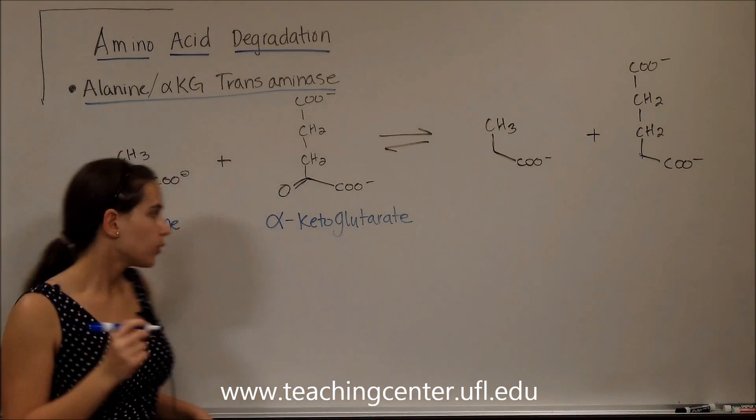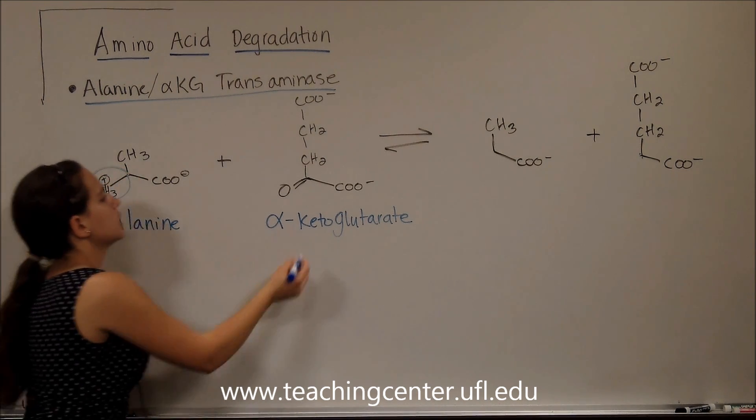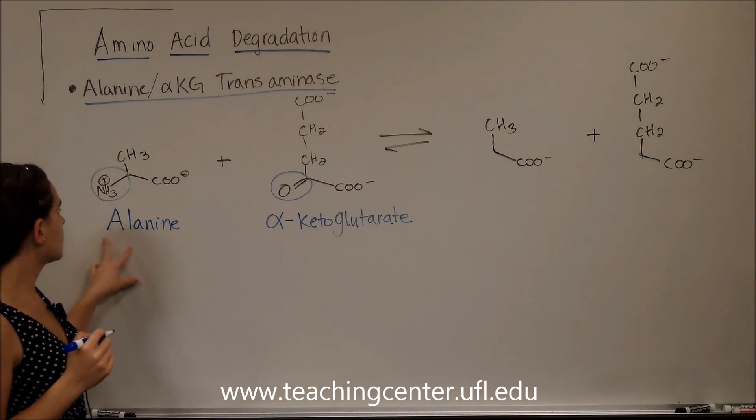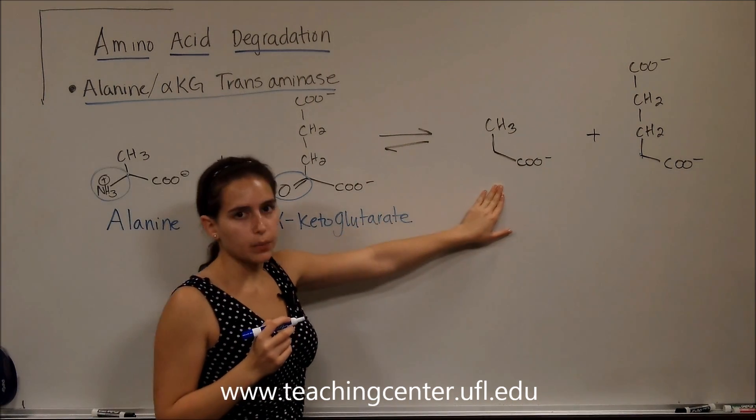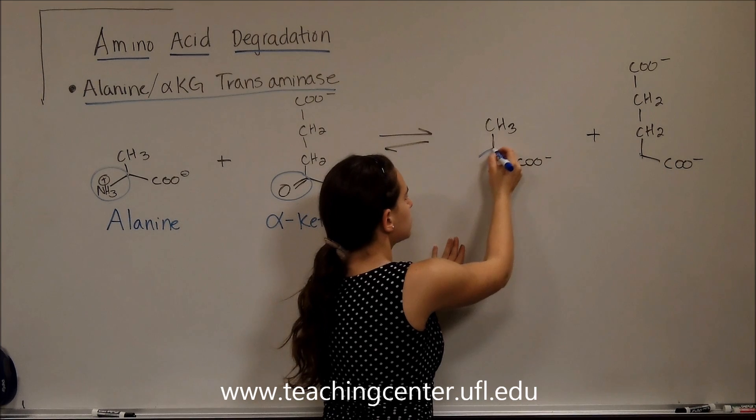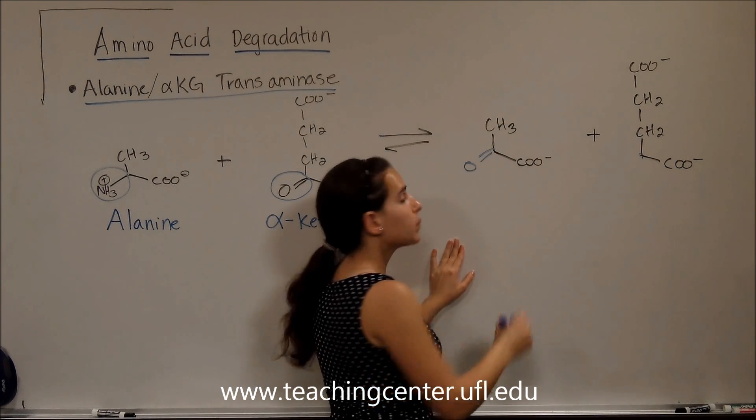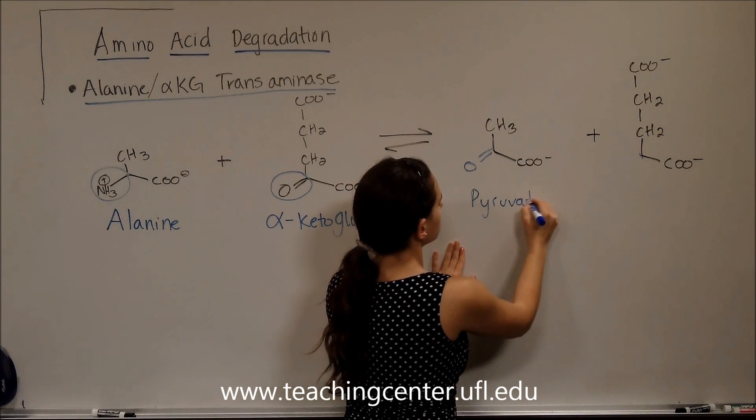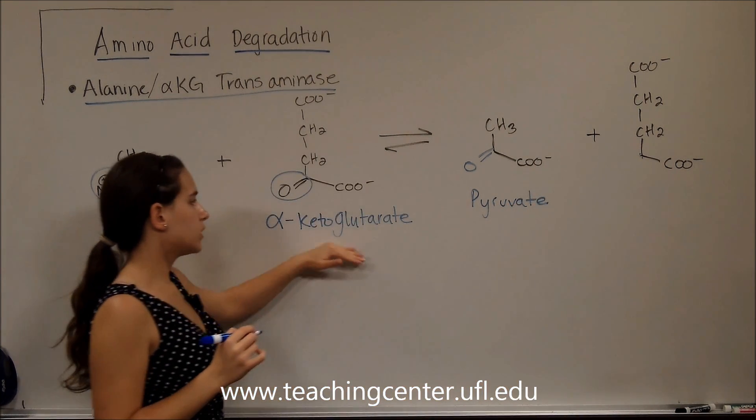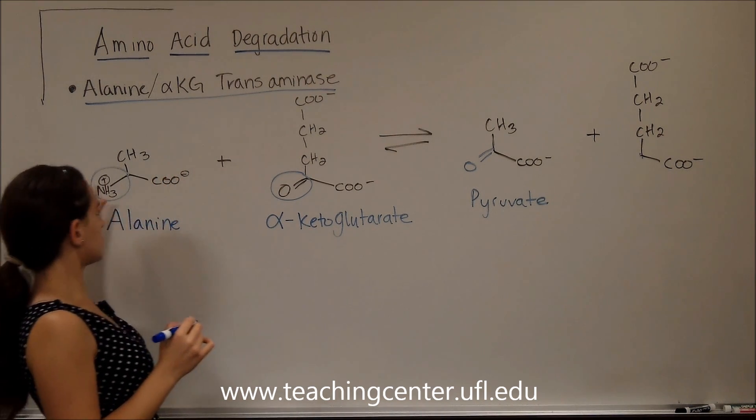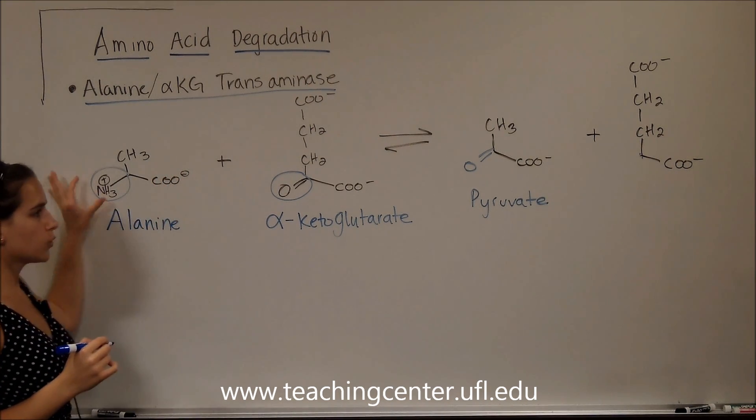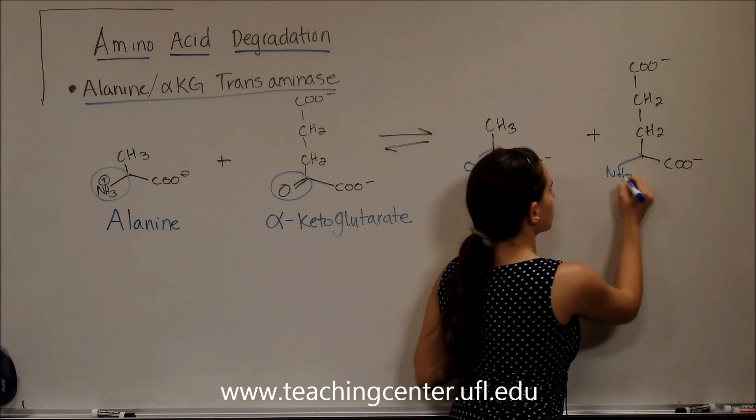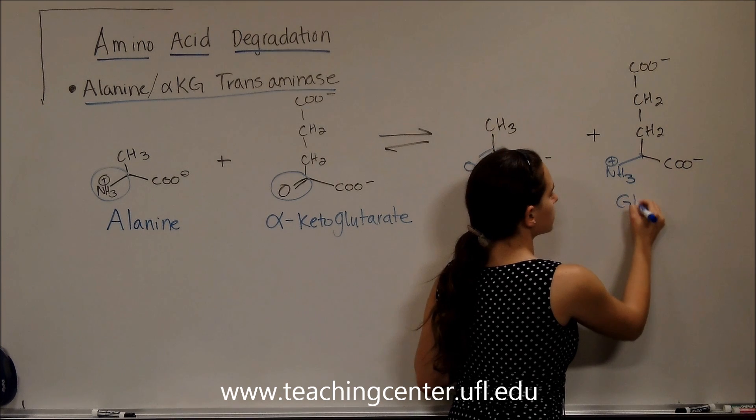Like we said before, we are going to be taking this amino group and this double bond O, or carbonyl, and we're going to switch them. So now, the alanine backbone is going to get that double bond O, right? That's going to become pyruvate. And the alpha-ketoglutarate is now going to get that amino group and become glutamate.